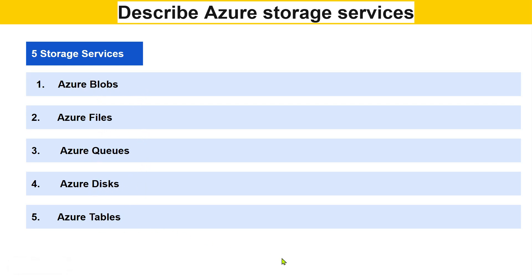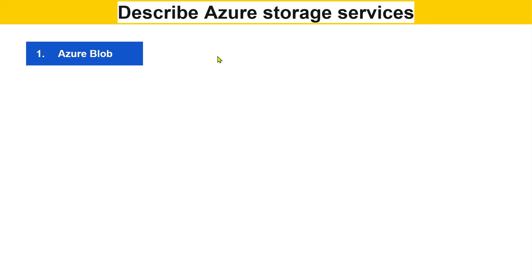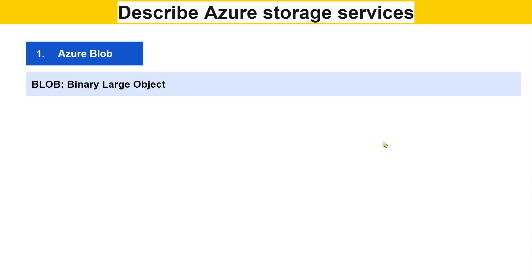The first storage service is Azure Blob. BLOB stands for Binary Large Object — B for Binary, L for Large, and OB for Object. Binary means zeros and ones, our digital data is binary data.